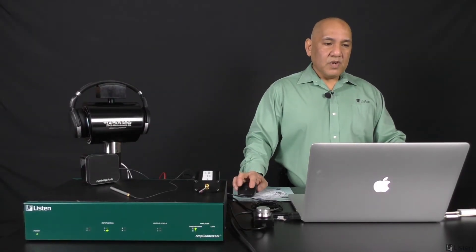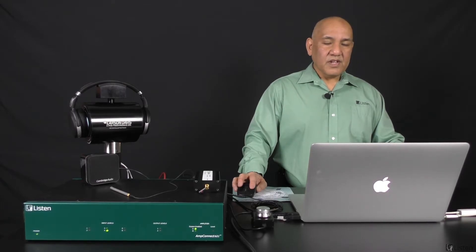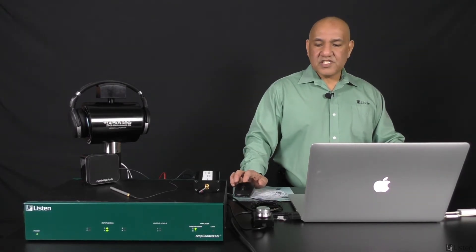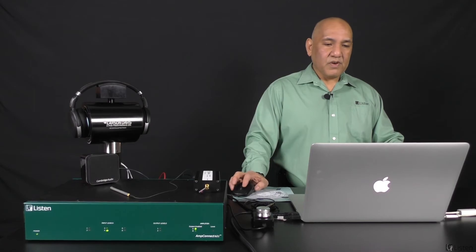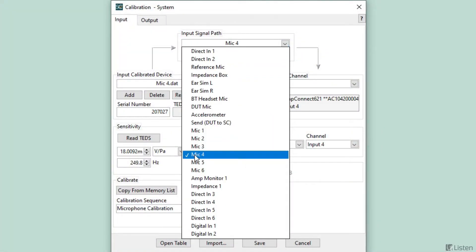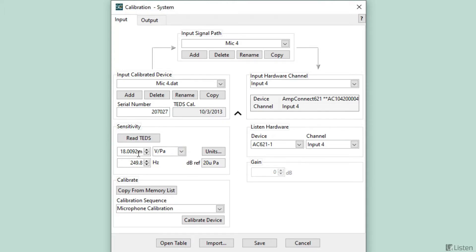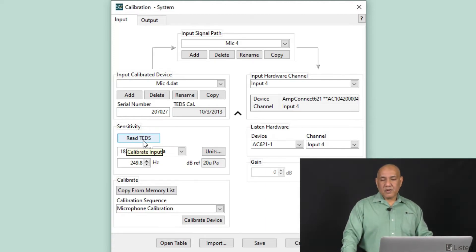Another nice thing about the 621 is that we have integrated full TEDS support. So if you have a TEDS microphone, this quarter-inch microphone is a TEDS-compatible microphone. And if I select the input, which is input four here, you'll actually see I can click this button to read the TEDS data off. The TEDS data will return the serial number as well as the internal calibration that's stored on this microphone. And there's the sensitivity as stored on that microphone. So that's fully integrated AmpConnect 621 support.